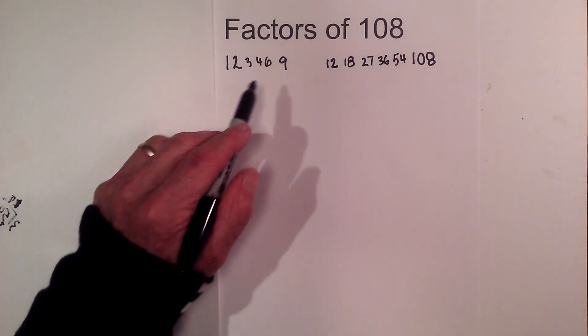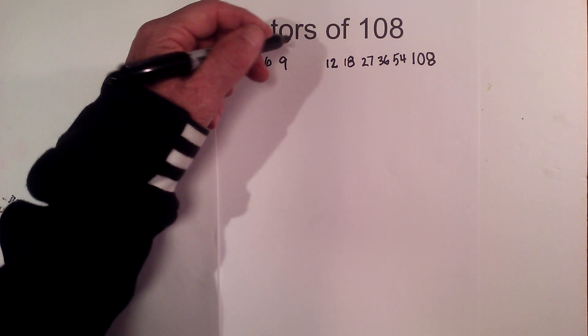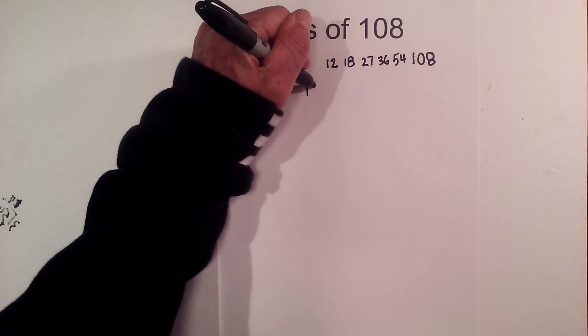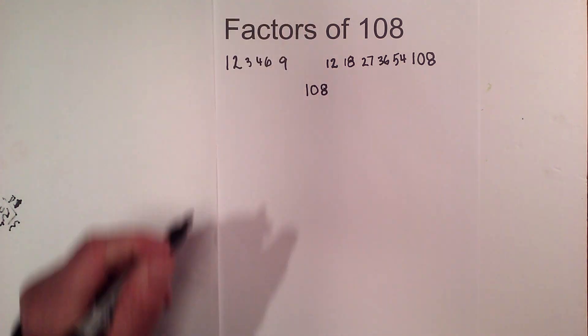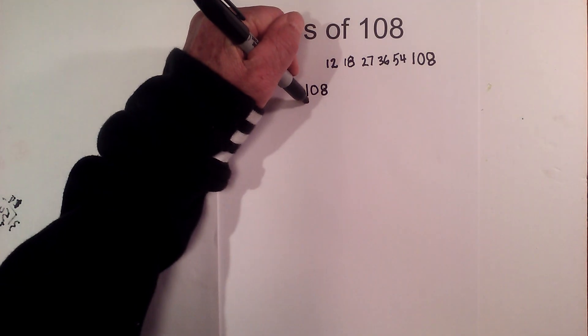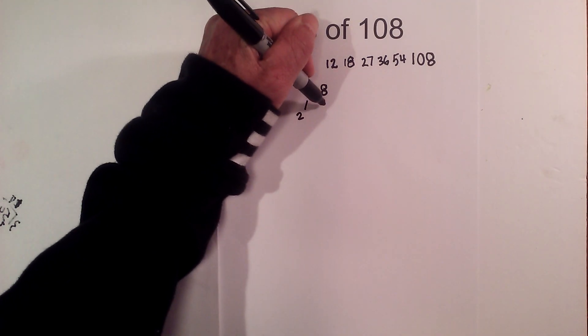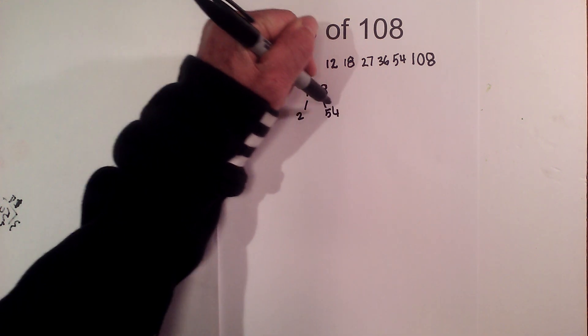Now I'll show you a trick to make sure you can double-check that you have all the factors. So let's find the prime numbers that multiply together to equal 108. And I like to use a factor tree. 2 goes into 108 fifty-four times.